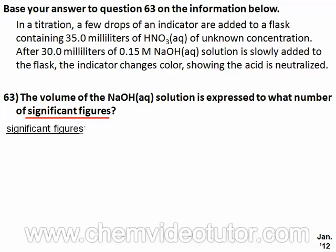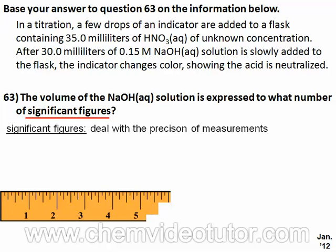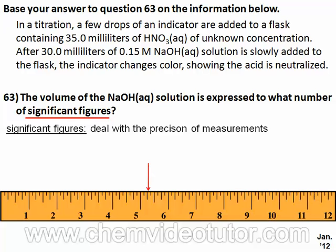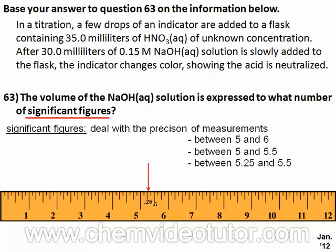Significant figures deal with the precision of measurements. For example, if we look at a ruler, we know that this arrow is pointing somewhere between 5 and 6. Halfway between 5 and 6 would be 5 and a half, so we know the arrow is somewhere between 5 and 5 and a half. Halfway between 5 and 5 and a half is 5 and a quarter, so this arrow is somewhere between 5 and a quarter and 5 and a half.